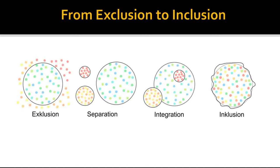Inclusion started its journey from exclusion. Exclusion occurred when students were denied access to education. As in the early times, the disabled children were kept out of the educational institutes and they were not considered for getting education.